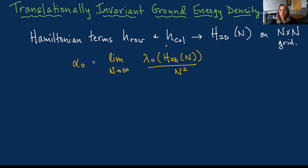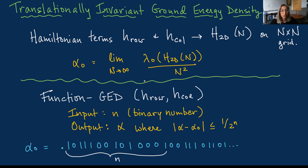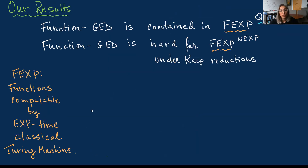We define the problem in two dimensions. We have Hamiltonian terms H-row and H-column, and the resulting Hamiltonian from applying these two terms on an n-by-n grid. This gives the ground energy per particle for a system of size n-by-n, and we're interested in this quantity as n goes to infinity. The problem we study is the function version: H-row and H-column are fixed parameters, the only input is n indicating desired precision, and the task is to output a number within 1 over 2^n of the true ground energy density alpha-naught. We show that the function version of GED is contained in function-EXP^{QMA-EXP} and is hard for function-EXP^{NEXP} under Karp reductions.